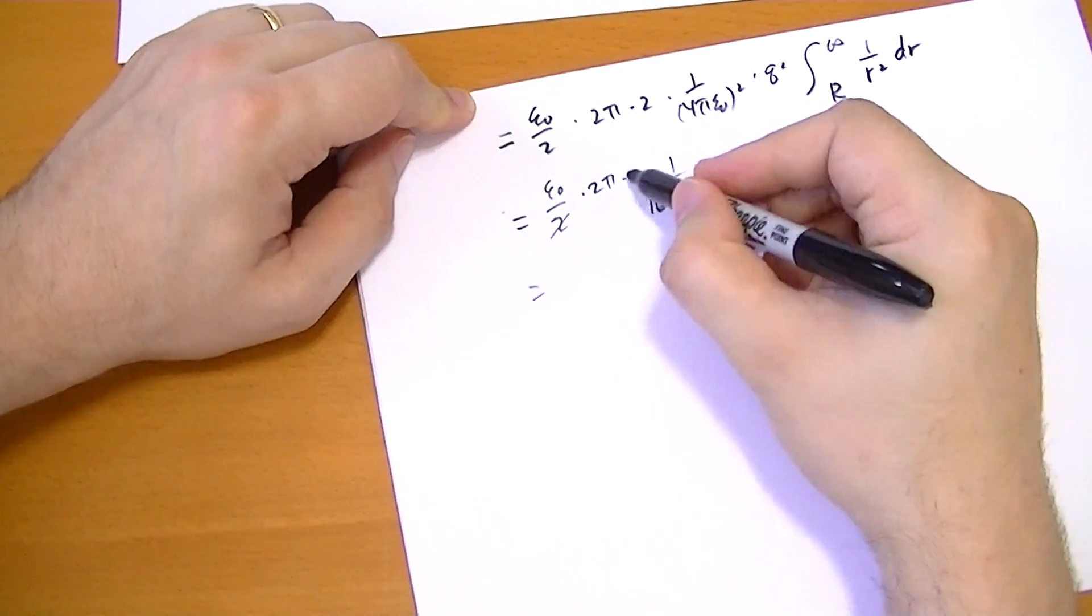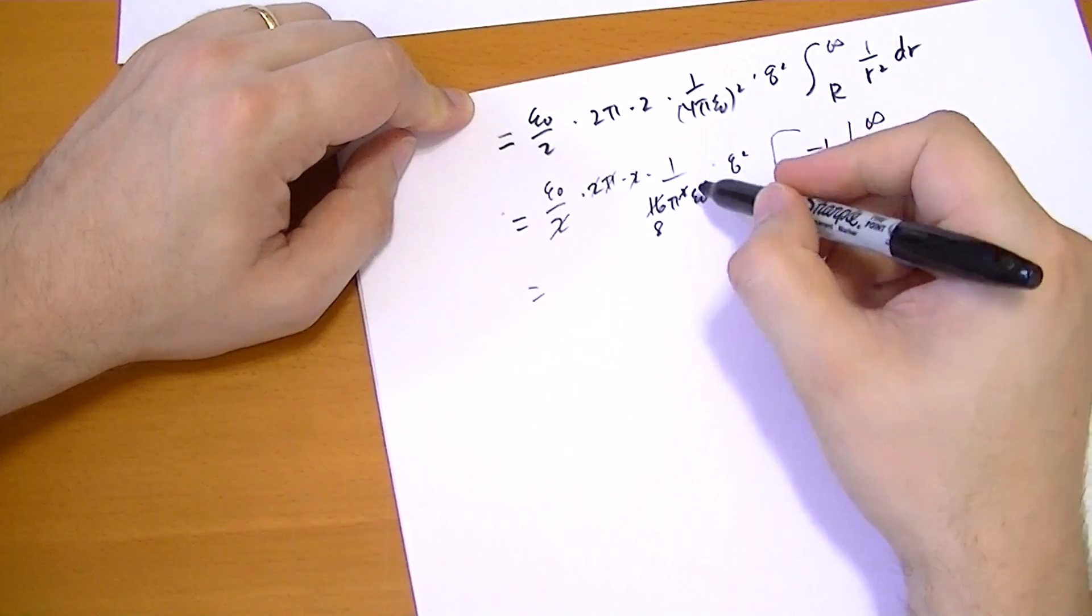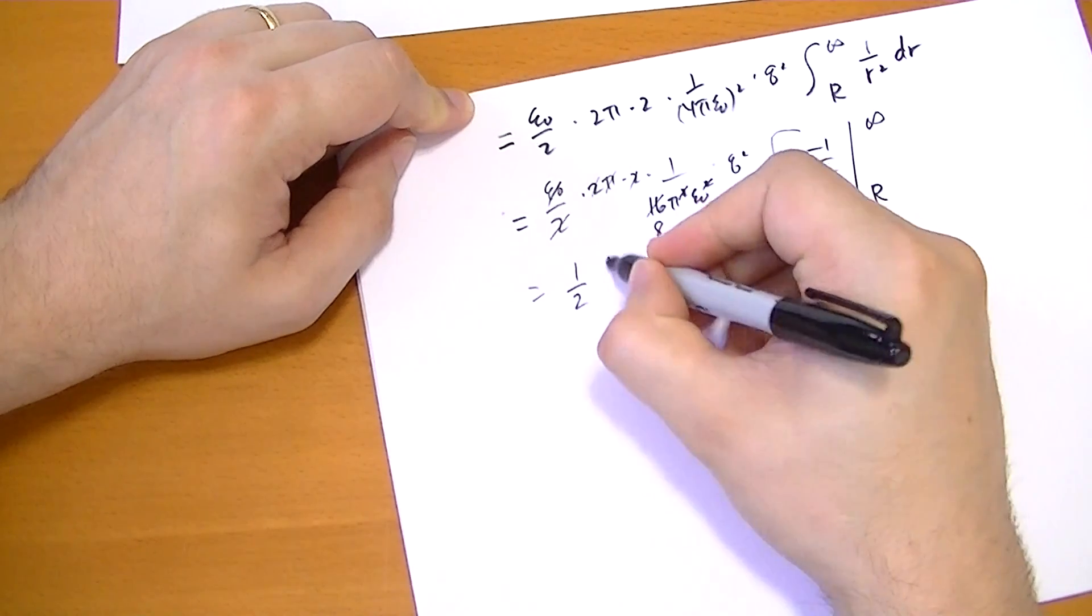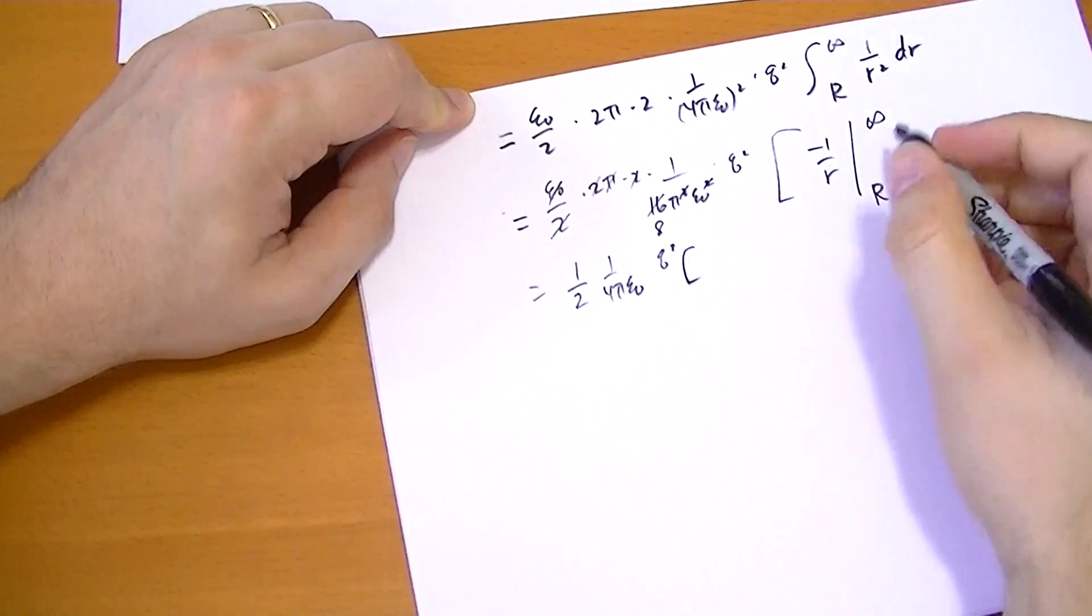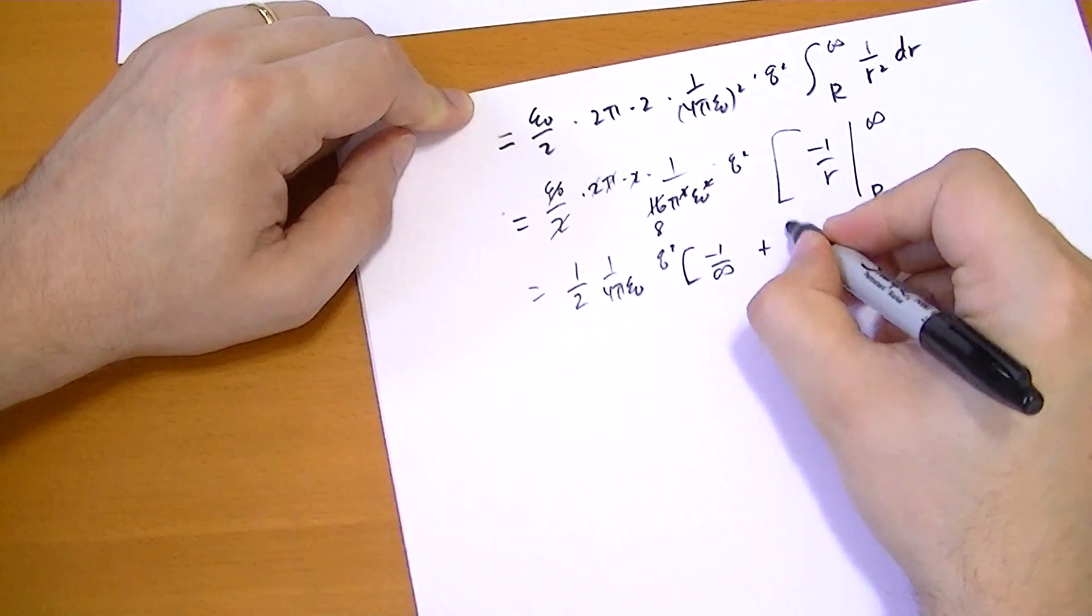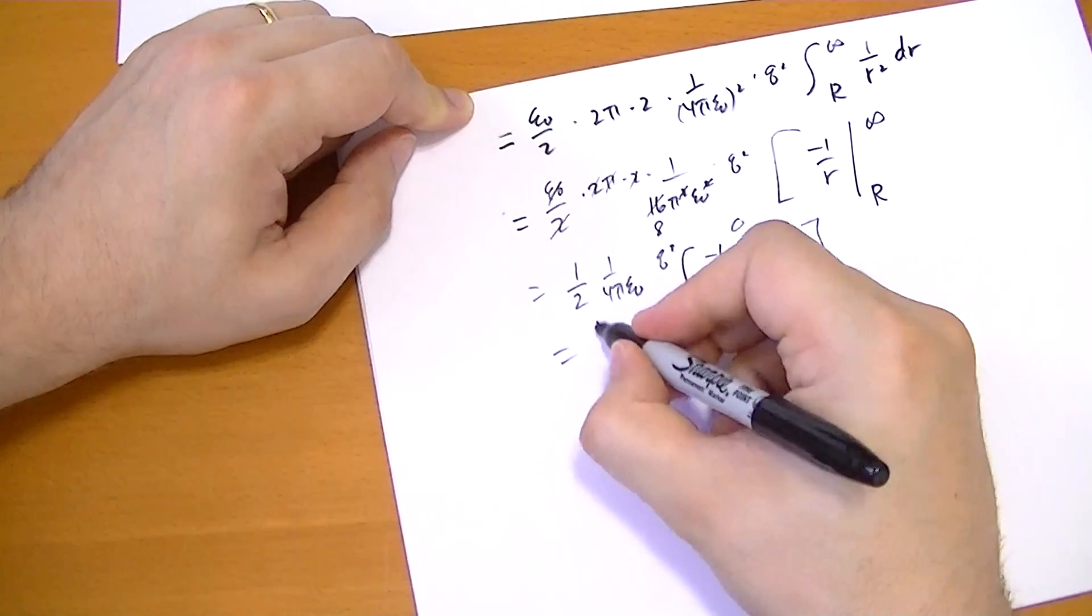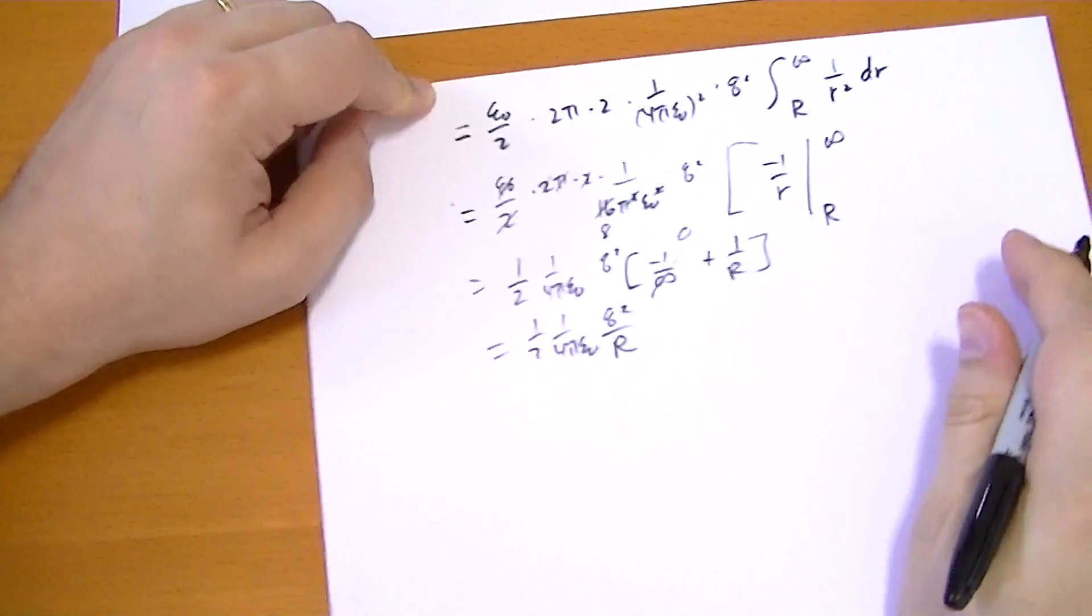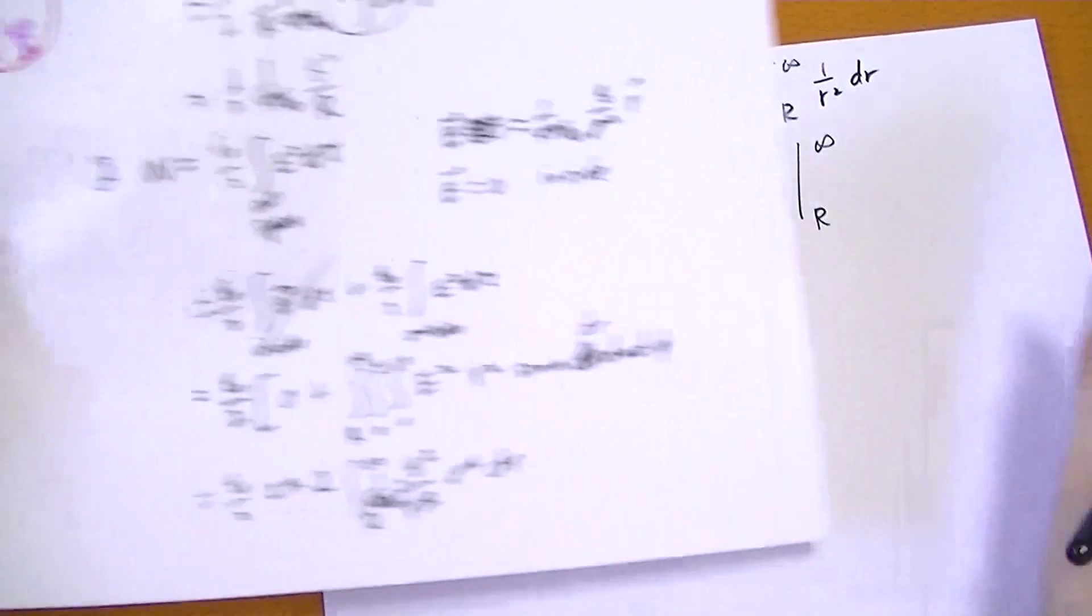Maybe we can start canceling some factors out here. So epsilon naught over 2 times 2 pi times 2, let's break this one out. So we have 16 pi squared epsilon naught squared times Q squared. Now this integral is going to be a negative 1 over R evaluated between R and infinity. We got 2's that cancel, these cancel, we're going to be left with 1 over 1 over 4 pi epsilon naught Q squared times minus 1 over infinity plus 1 over R. That's obviously 0. So we have 1 over 4 pi epsilon naught Q squared over R, which surprisingly enough is exactly the answer we got earlier.